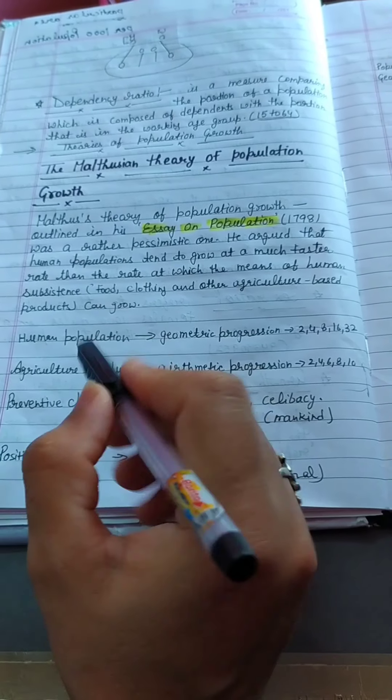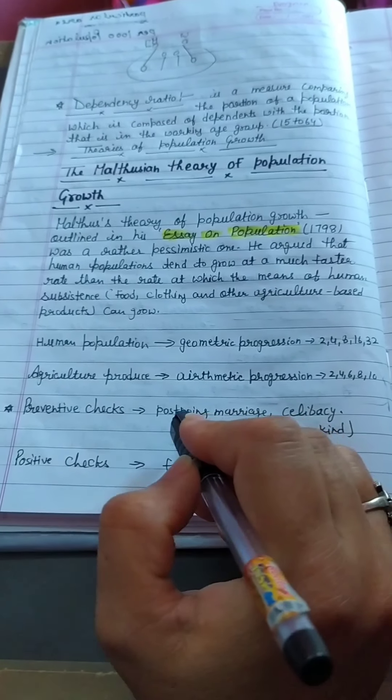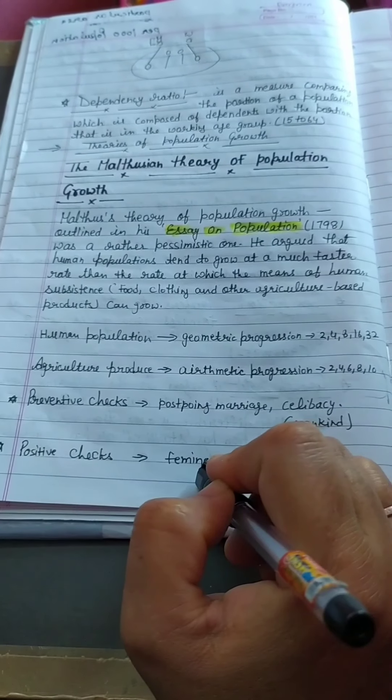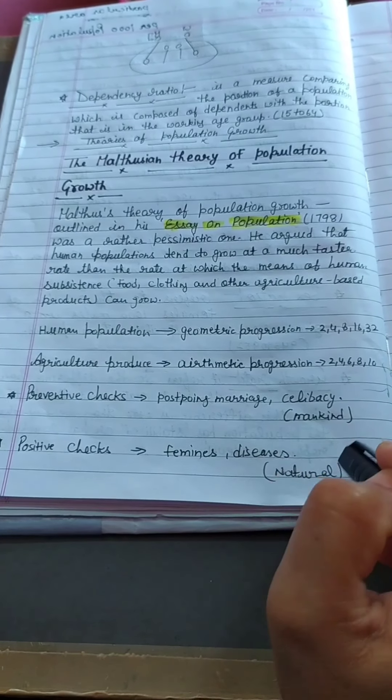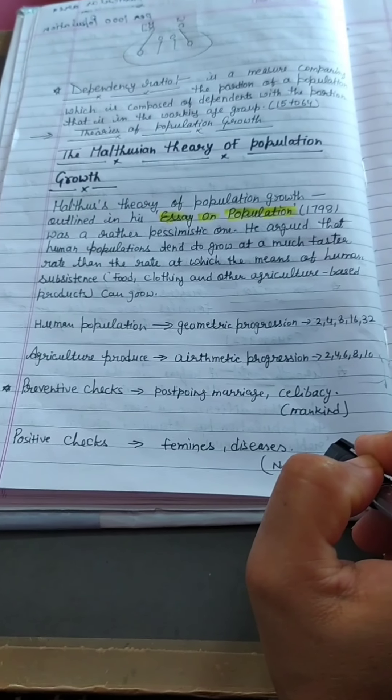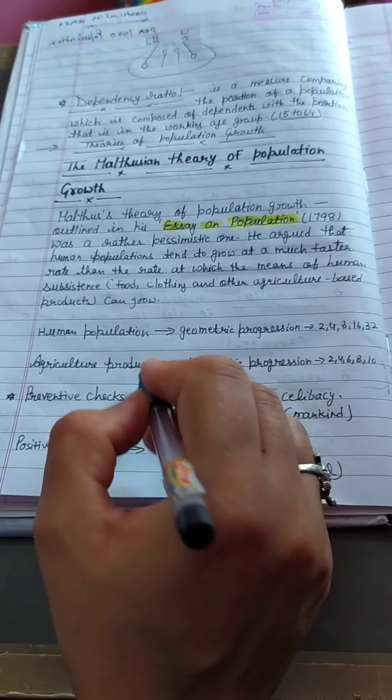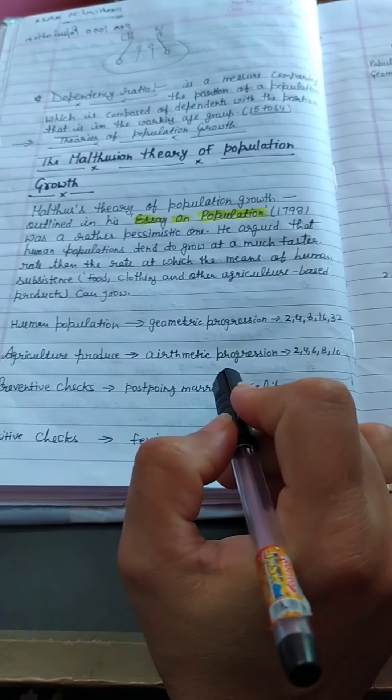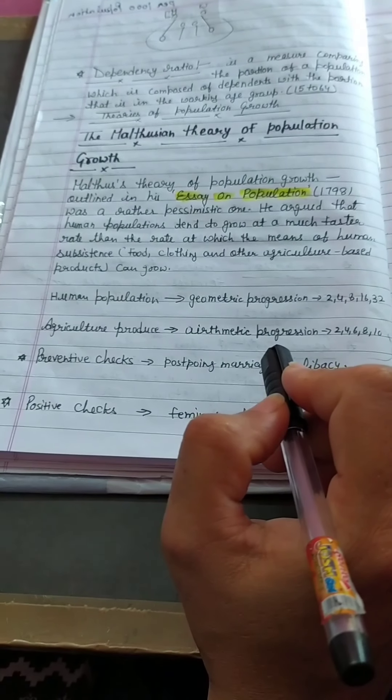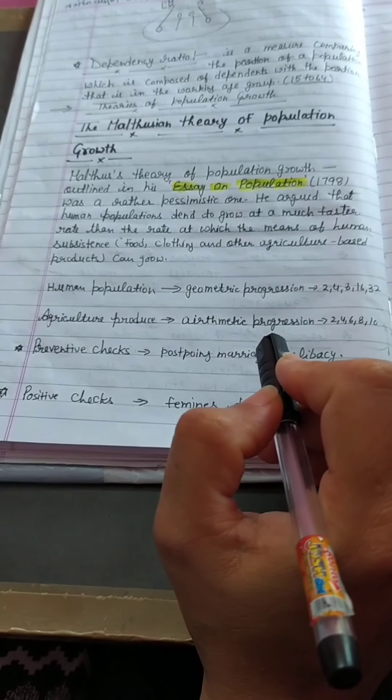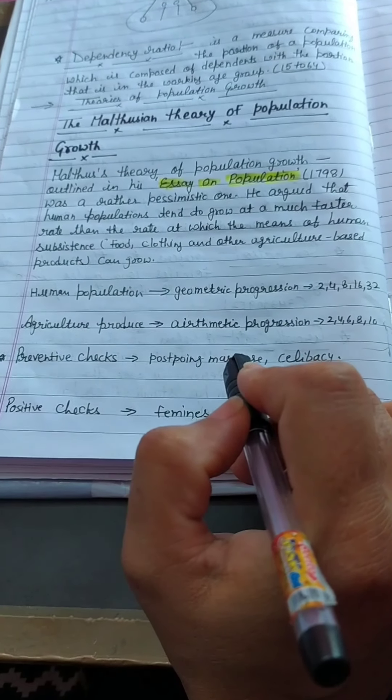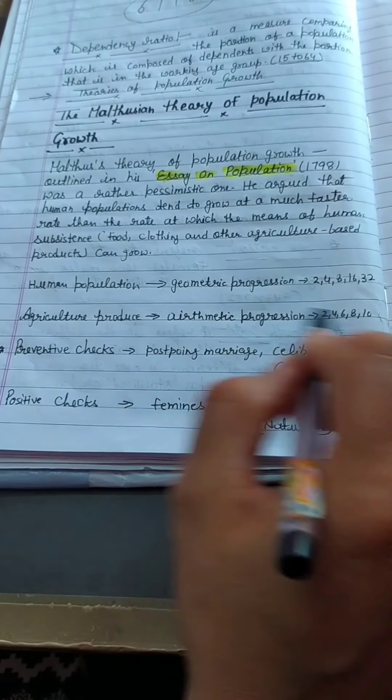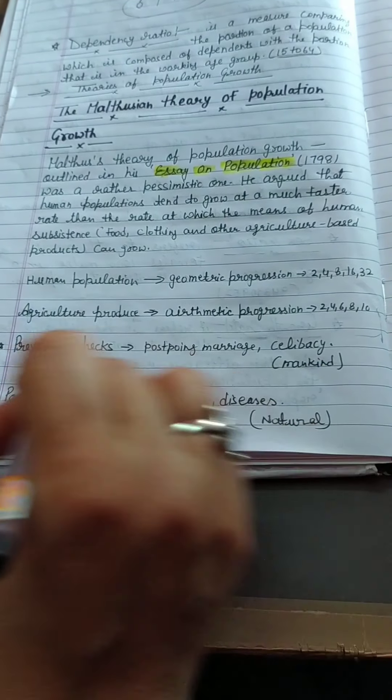According to Malthus, preventive checks include postponing marriage and celibacy. And the positive checks are famine, disease, earthquake, or any natural disaster. Preventive checks, because they are under control of human beings, are not very reliable.